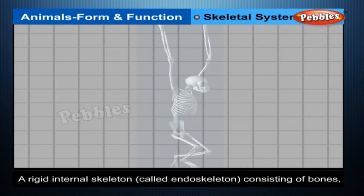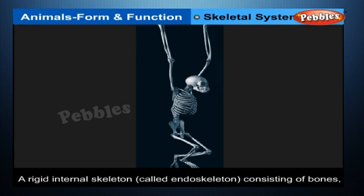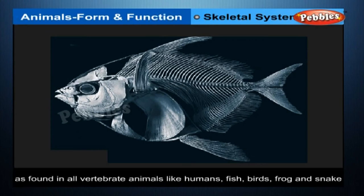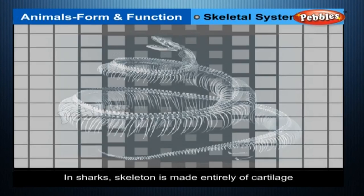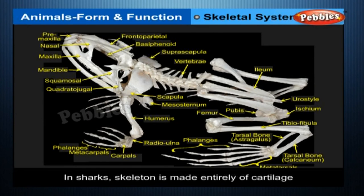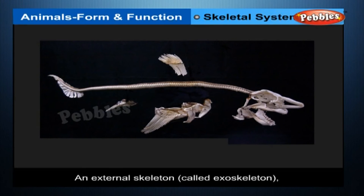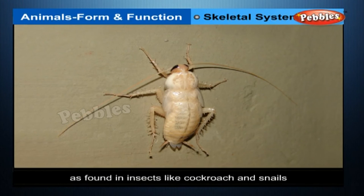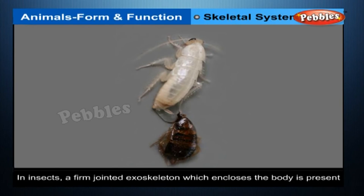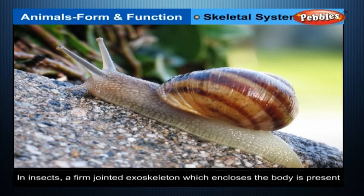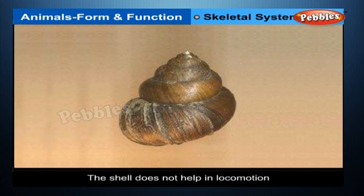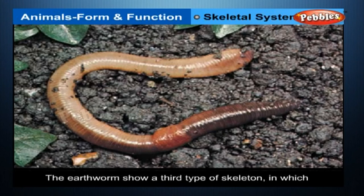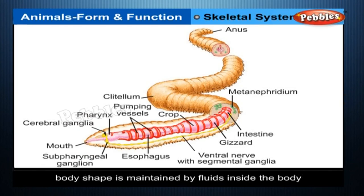Skeletal System in Animals. There are three types of skeletons in animals: a rigid internal skeleton called an endoskeleton, consisting of bones, as found in all vertebrate animals like humans, fish, birds, frogs, and snakes. In sharks, the skeleton is made entirely of cartilage. In some animals without bones, two other types are found: an external skeleton called an exoskeleton, as in insects like cockroaches and snails — in insects, a firm jointed exoskeleton encloses the body; in snails, a hard shell forms the rigid exoskeleton, serving a protective role. The earthworm shows a third type — a hydrostatic skeleton — in which body shape is maintained by fluids inside the body. The fluid forms an incompressible skeleton around which muscles act and bring about movement.